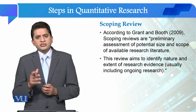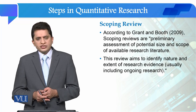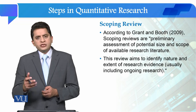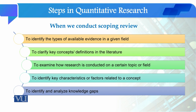Looking at the objectives of the scoping review: the first objective is to identify the types of available evidence in a given field — what is available, including quantitative studies, qualitative studies, mixed method studies, what are the sample sizes, and what methodologies are used.